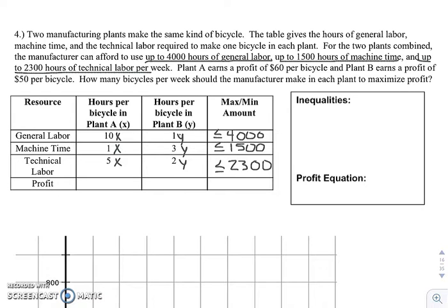And then it says up to 2,300 hours of technical labor. So again, less than or equal to 2,300 hours. I'm just going to put variables here since it gives us x as the variable for plant A and y for the variable for plant B. That's 2y. Plant A earns a profit of $60 per bicycle. So we're going to say $60 for each bike in that plant. And then plant B earns a profit of $50, so 50y for plant B.